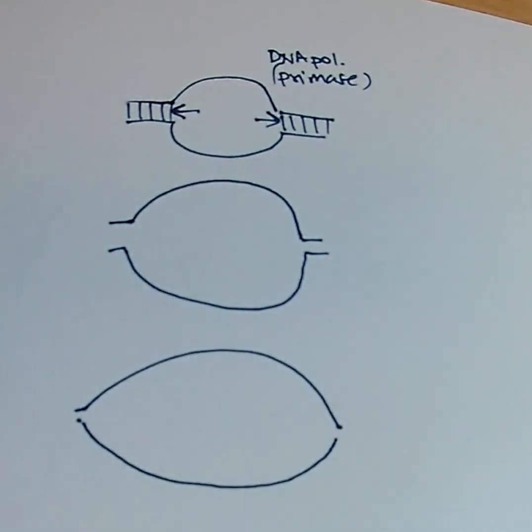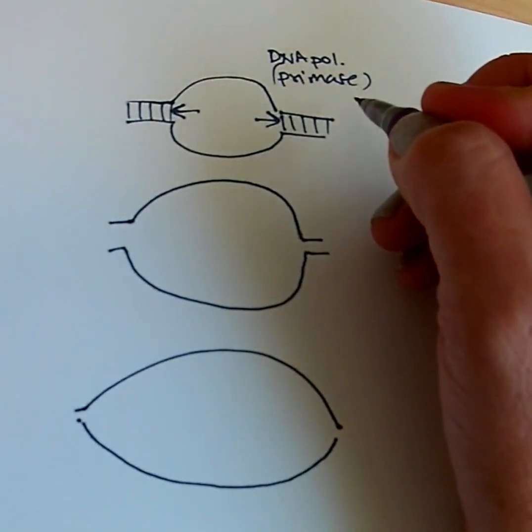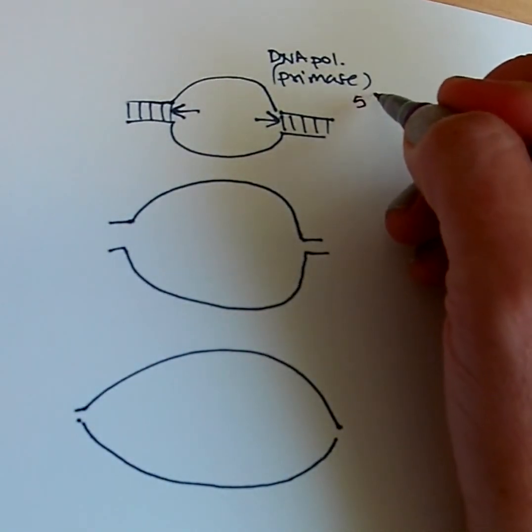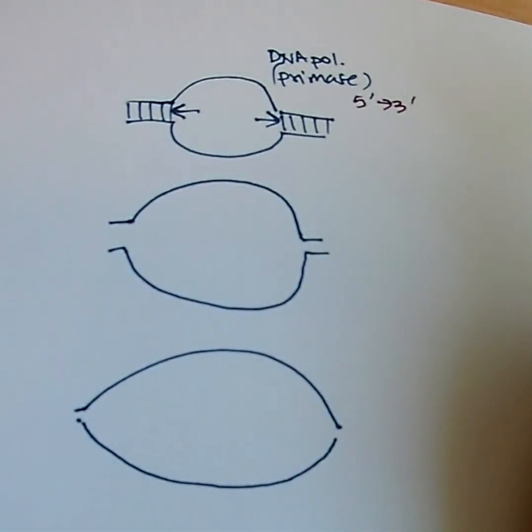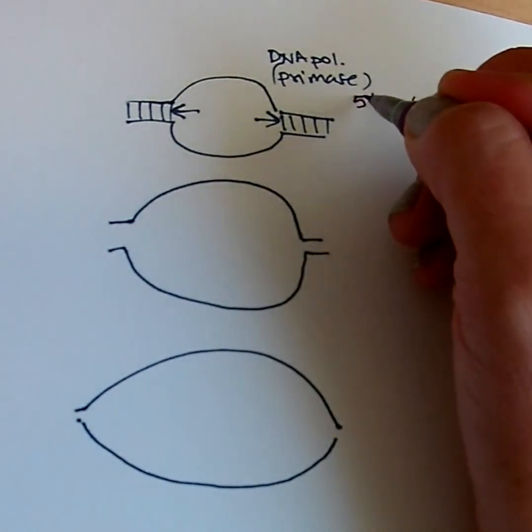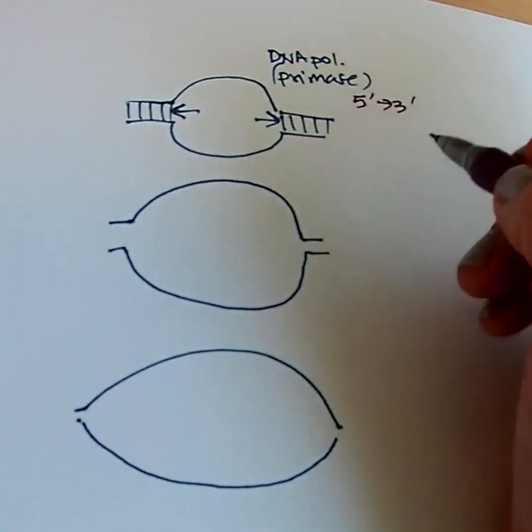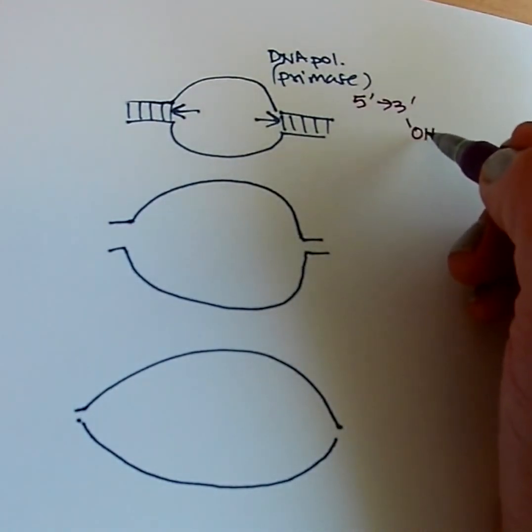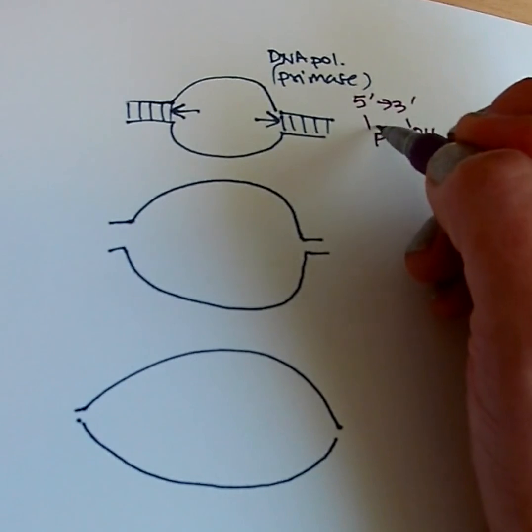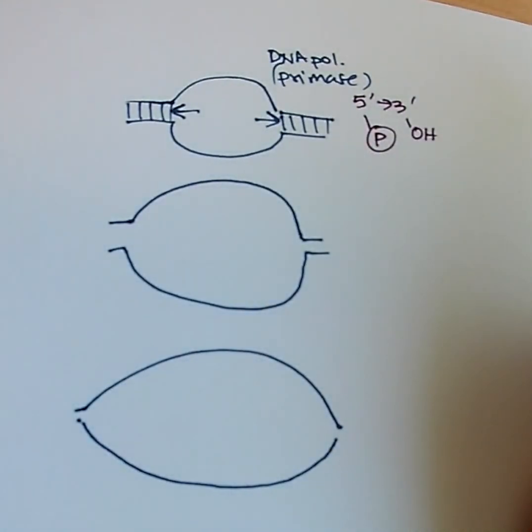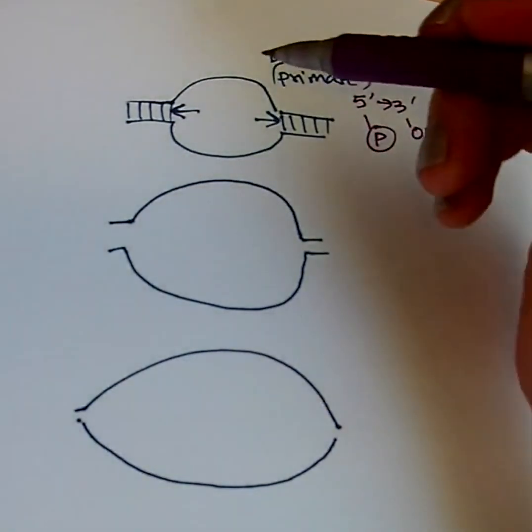Now for DNA polymerase, we remember that it always works in the five prime to three prime direction. So it lays down the five prime end first and then the three prime end later. So it only can travel in one direction. It can only add on nucleotides to the OH group. It cannot add on nucleotides to a phosphate group.